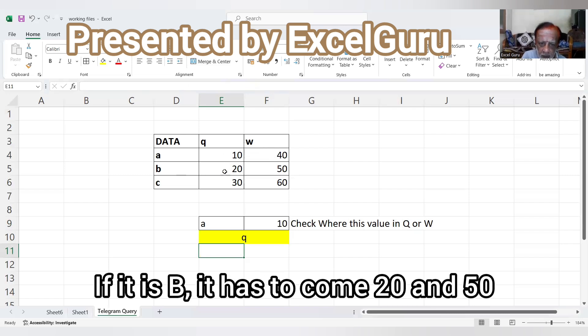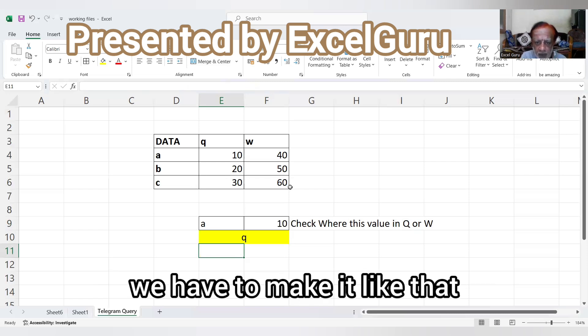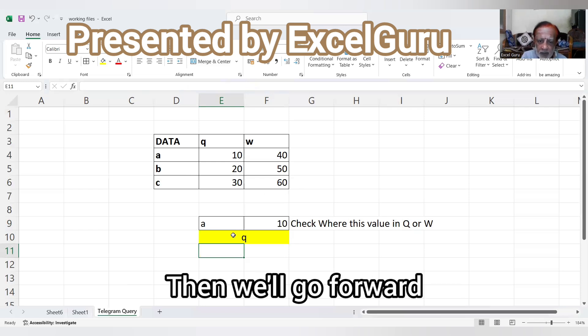As per this city, we need these two things. If it is B, it has to come 20 and 50. If it is C, it has to come 30 and 60. We have to make it like that, then we will go forward.